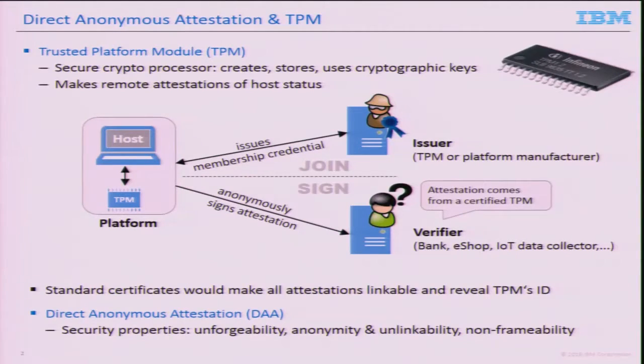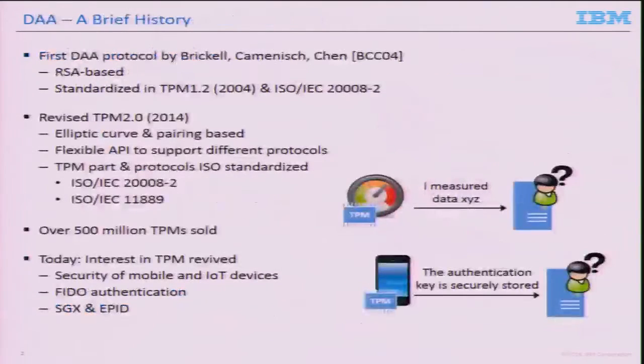The DAA protocol makes attestations in an anonymous way. The verifier is convinced it sees an attestation from a certified TPM without learning which concrete TPM made the attestation. Attestations are fully unlinkable unless the host decides otherwise. The host can make signatures with respect to a pseudonym and choose to reuse its pseudonym, but by default they're fully unlinkable.